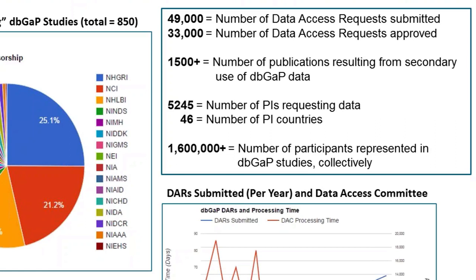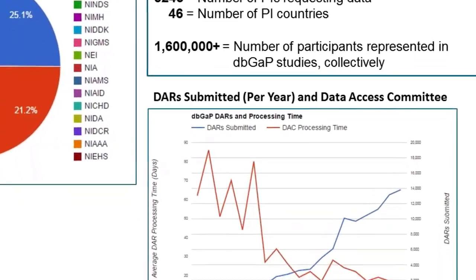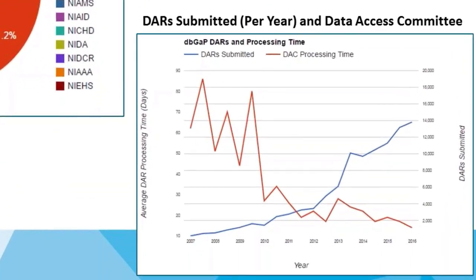There have been over 5,000 PIs requesting access to the data from 46 countries, and for these studies in DbGAP, we have over 1.5 million participants represented. I'd also like to point out that at the beginning there was a learning curve for everyone. In 2007 we had our first request coming in, and you can see an increase in the number of requests from 2007 to 2016. The red curve shows the processing time for the data access committee — we were at about close to 65 days at the very beginning, but we're now down to less than 15 days. That really shows that we've been able to work together to process requests rather quickly.